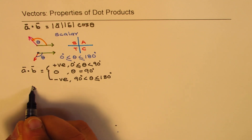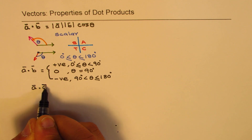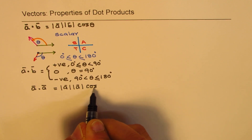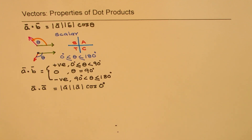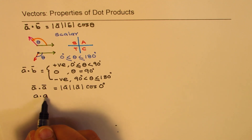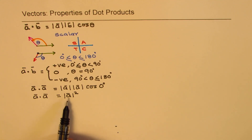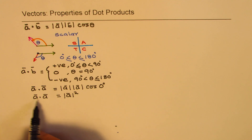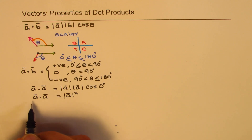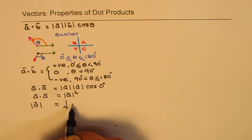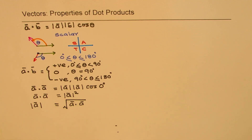An interesting case: if I take the dot product of a vector with itself, I get the magnitude of a times the magnitude of a times cosine of 0 degrees. So a dot a equals the square of its magnitude. This is an important application — the magnitude of vector a equals the square root of a dot a.